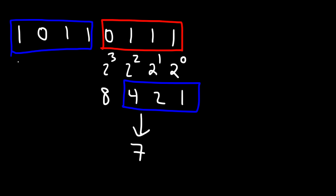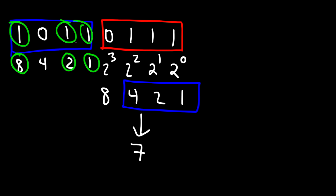Now for this group we have the values 8, 4, 2, and 1. So we're going to add up 8, 2, and 1 — that's 8 plus 2 plus 1, which gives us 11.